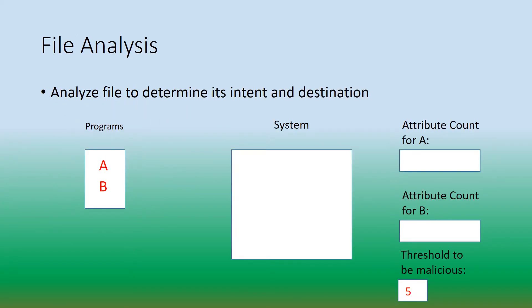In file analysis, we're trying to determine the program's purpose and its destination by looking at the program's code. So let's say program A enters the system. The system will analyze program A, and for example, the system finds out that program A deletes files off your system. The system might determine that this is a bad attribute of A, and so we might flag this as an attribute.